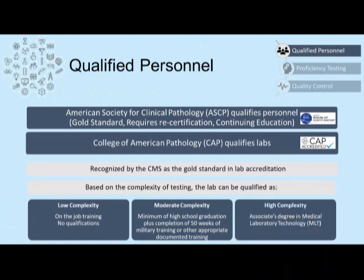We left off last time talking about the three different elements of quality assurance. The first of those three components is having qualified testing personnel. Before you become a qualified testing personnel or member of a clinical laboratory, you must first complete a nationally accredited clinical laboratory science or medical laboratory technology program. Once you complete that program, you'll be eligible to take a certification exam, which will allow you to work in a clinical laboratory. The American Society for Clinical Pathology, or ASCP, qualifies testing personnel. It's the gold standard for laboratory qualification personnel and offers recertification through continuing education.